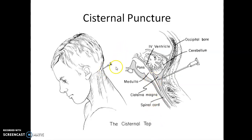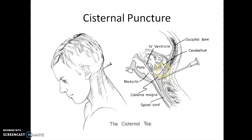Hence, this procedure is done rarely and only by a specialized neuroanesthesiologist. It is called cisternal puncture or cisternal tap — accessing the cerebro-medullary cistern via the suboccipital triangle. The needle is passed through the posterior atlanto-occipital membrane (the floor of the suboccipital triangle) to reach the cerebro-medullary system. The CSF is drained for examination — such as bacterial culture — to identify the cause of meningitis and allow treatment with appropriate antibiotics.